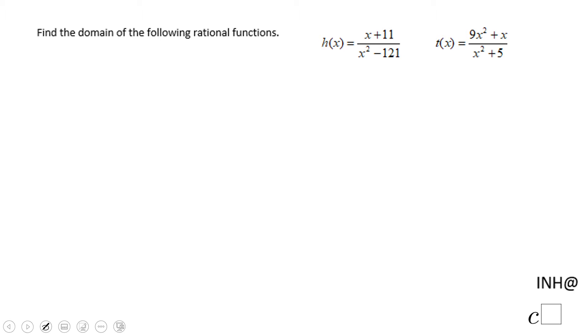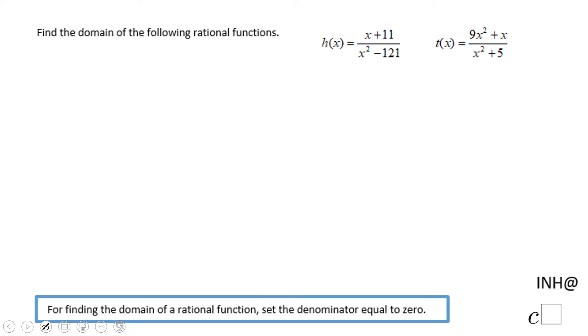The first rational function is h(x) equals x plus 11 over x squared minus 121. To find the domain, you need to set the denominator equal to zero, so you're going to take that denominator x squared minus 121 equals zero. This is a difference of squares. We can factor out x minus 11, x plus 11 equals zero.